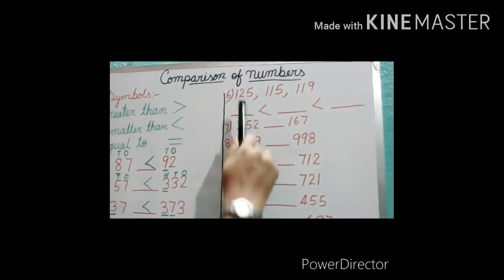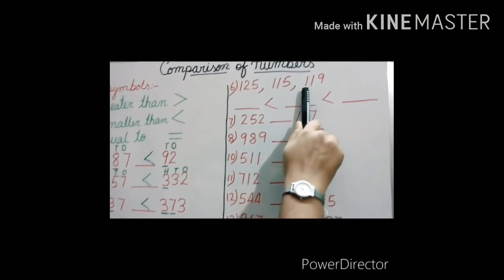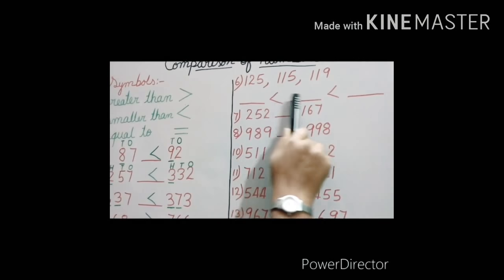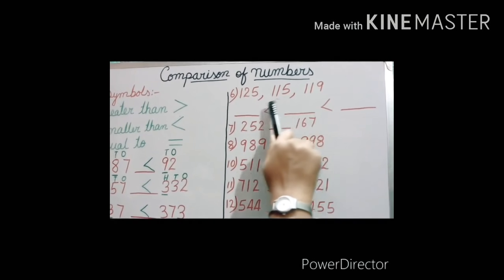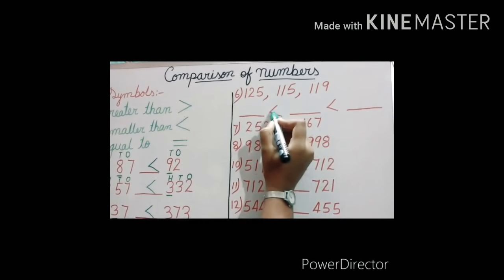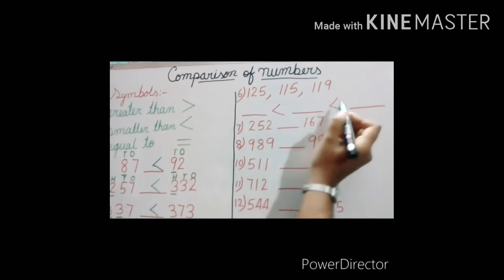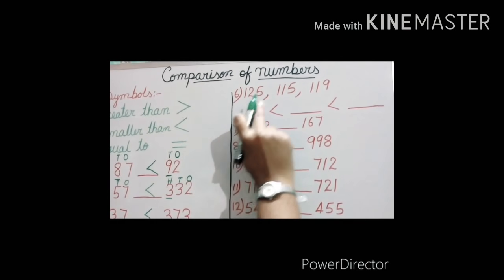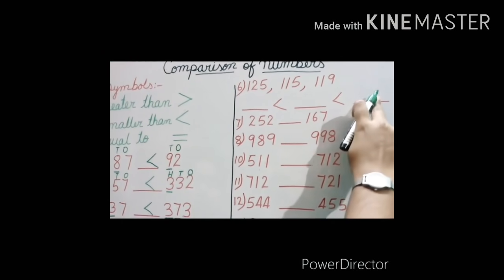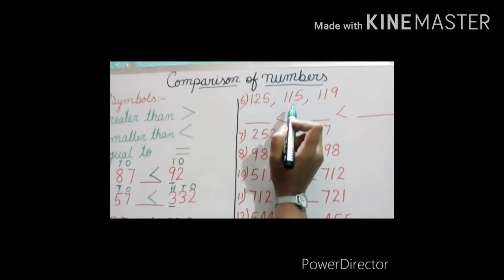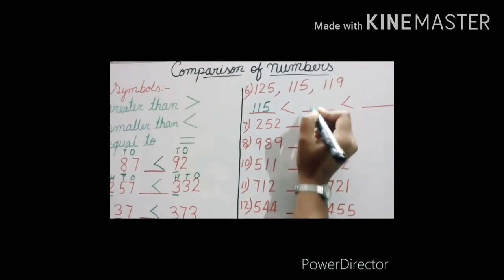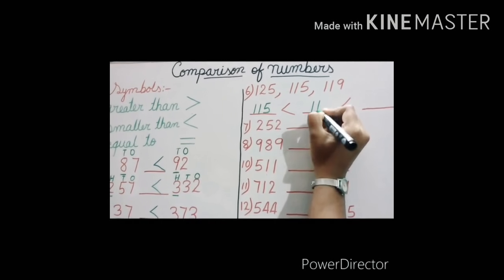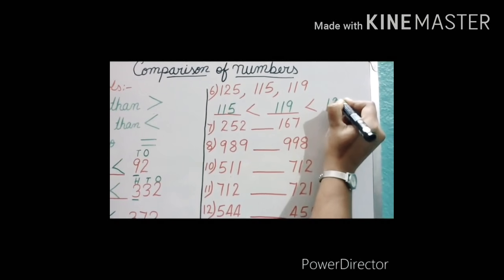Come to question number 6. Here I have given you 125, 115, and 119 — with three places to fill. The sign here means we are writing from smallest to largest. The smallest one will come first, after that the next, and after that the last. You have read about ascending and descending order. Tell me the smallest one — 115. Next: 119. And the last one: 125. Very good.